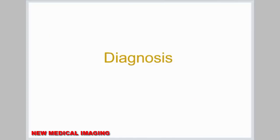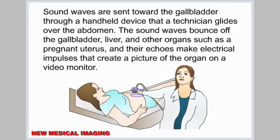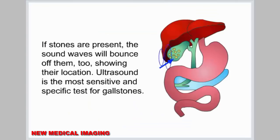Diagnosis. When gallstones are suspected to be the cause of symptoms, the doctor is likely to do an ultrasound exam. Ultrasound uses sound waves to create images of organs. Sound waves are sent toward the gallbladder through a handheld device that a technician glides over the abdomen. The sound waves bounce off the gallbladder, liver, and other organs, and their echoes make electrical impulses that create a picture of the organ on a video monitor. If stones are present, the sound waves will bounce off them too, showing their location. Ultrasound is the most sensitive and specific test for gallstones.